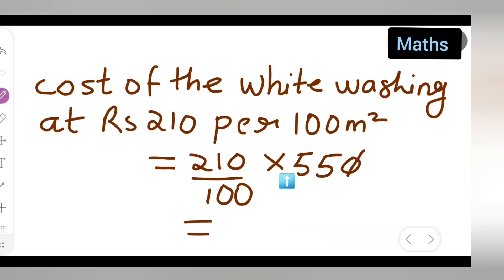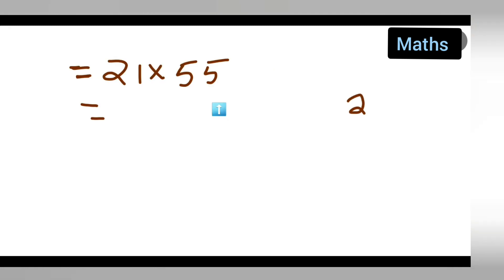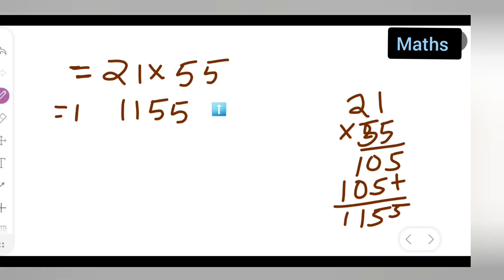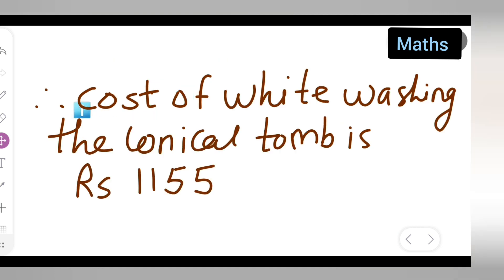The zeros cancel out, leaving 21 × 55. Multiplying: 21 × 55 = 1155. So the answer is ₹1155. Therefore, the cost of white washing the conical dome is ₹1155.